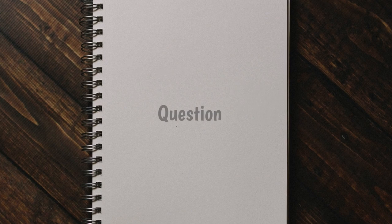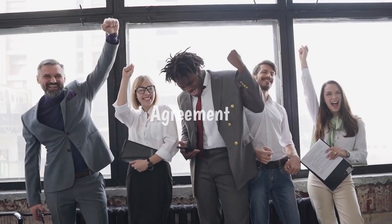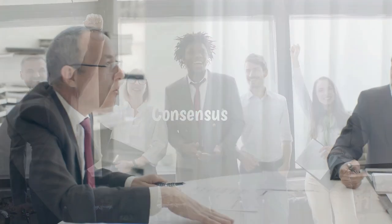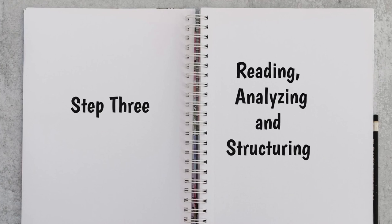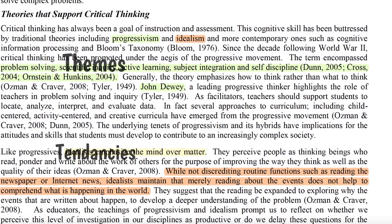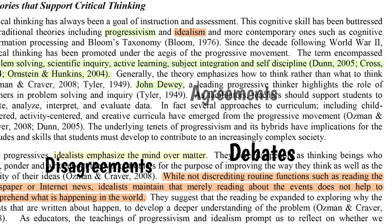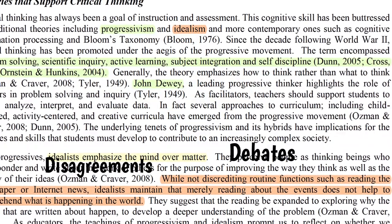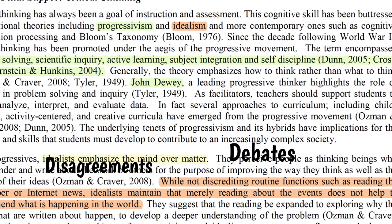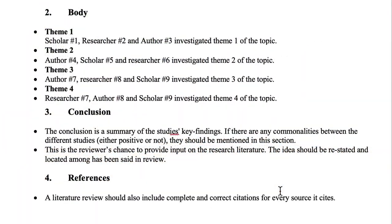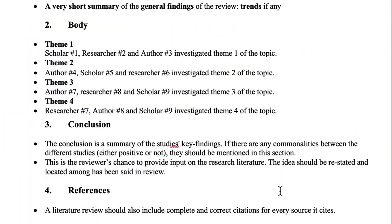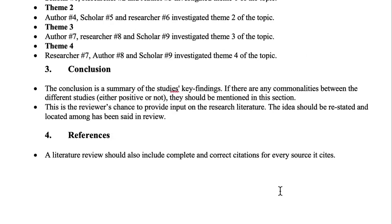One interesting question: what are the wise people agreeing on and disagreeing about? This is step 3 — reading, analyzing, and structuring, all in the same operation. Here is how. As you read, be strategic. Keep watch for themes, debates, agreements, disagreements, or anything that you feel is prominent throughout your reading. Based on your topic and what you identify in the literature, you will be able to establish an outline for your literature review.